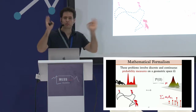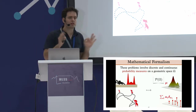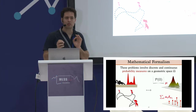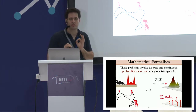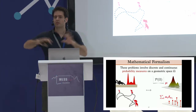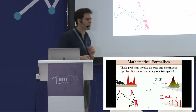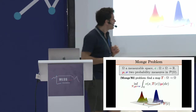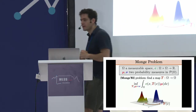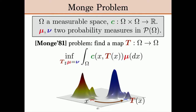In Monge we are focusing on a one-to-one mapping, whereas in Kantorovich we are focusing on one-to-many mappings — this is a key feature. Let me give a more mathematical formulation for all this.